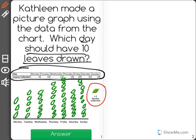So when I counted, for example, Monday had six leaves, I counted two, four, six. There are three leaves here, and the question is which day should have 10 leaves drawn?